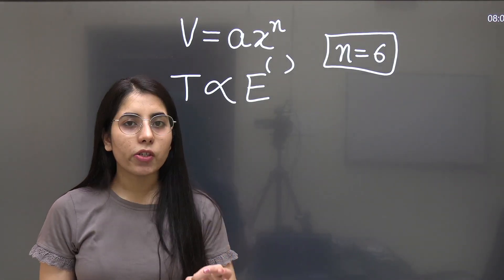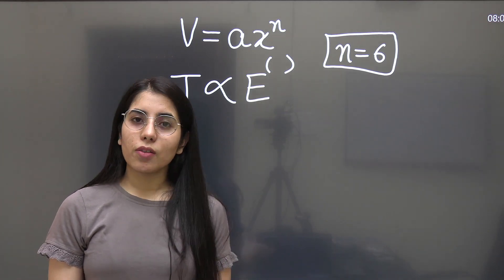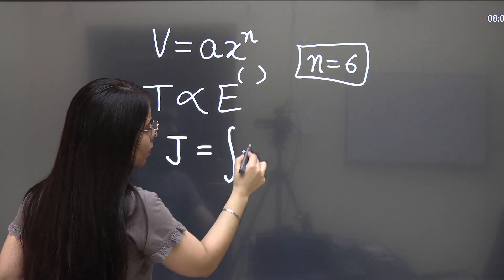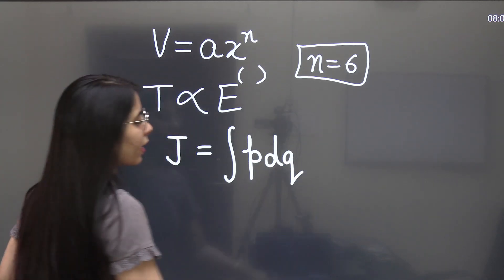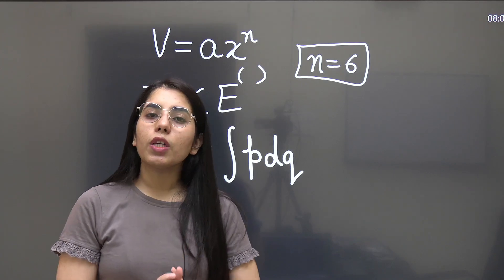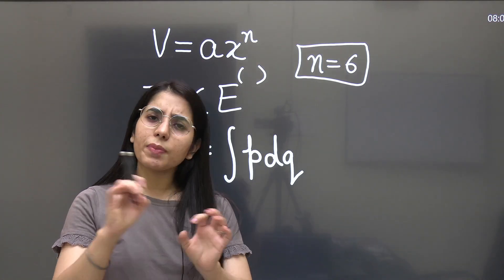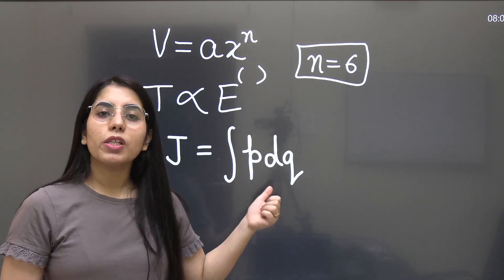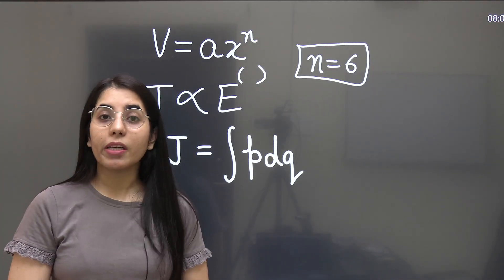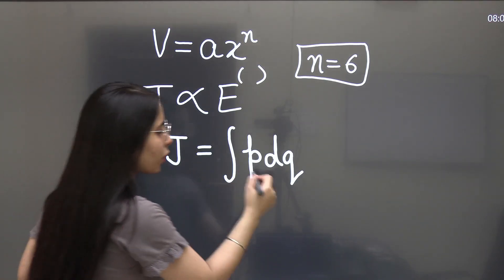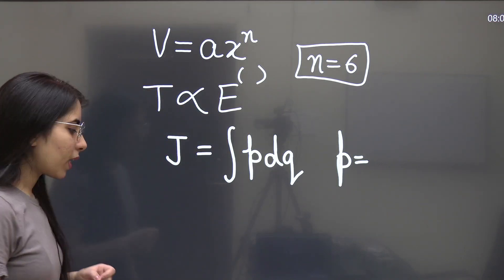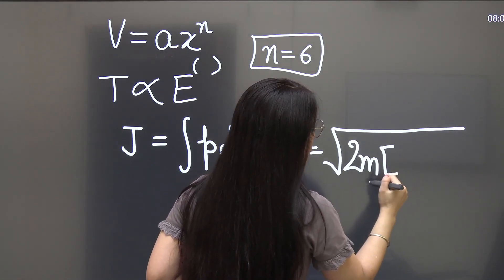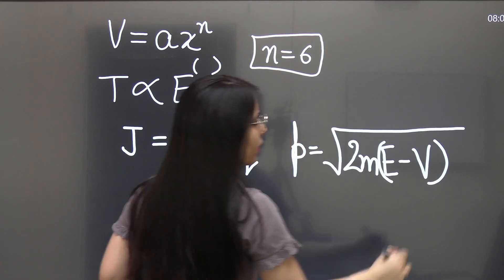Here we will be talking about the action-angle variable. What is the action-angle variable? Basically it's going to be J equal to the integration of p dq, or you can write p dx, which is related to phase space. Even if you want to find the volume of phase space, or something related to phase space has been asked in the question, the action-angle variable will help you get the dependencies. What is p here? p is the generalized momentum. In classical mechanics, the p expression is going to be root of 2m(E minus V).